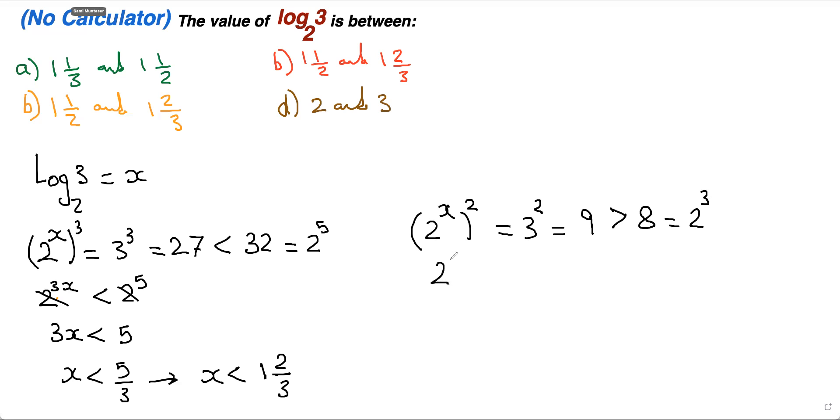Now we can say 2 to the power of 2X is greater than 2 to the power of 3. Cancel the bases. Because 2X is greater than 3. And therefore, X is greater than 3 halves, which is X is greater than 1 and 1 half.